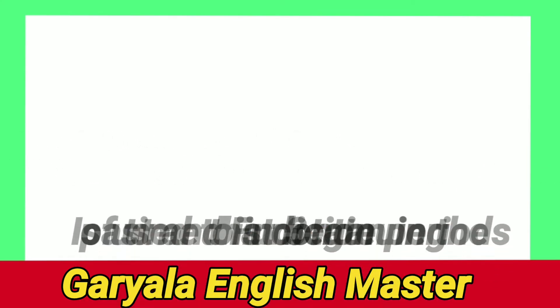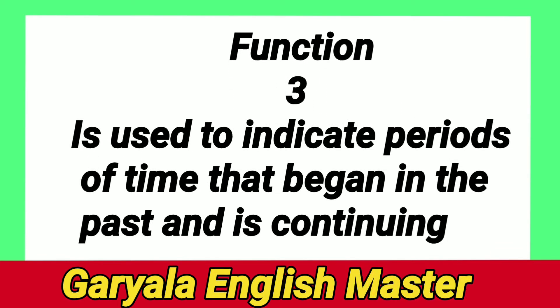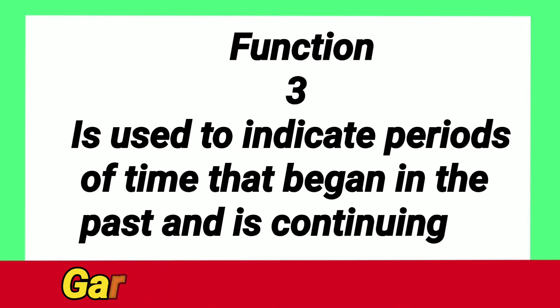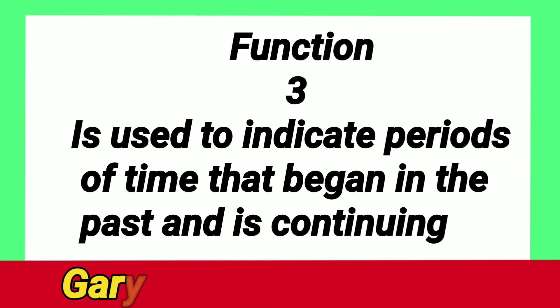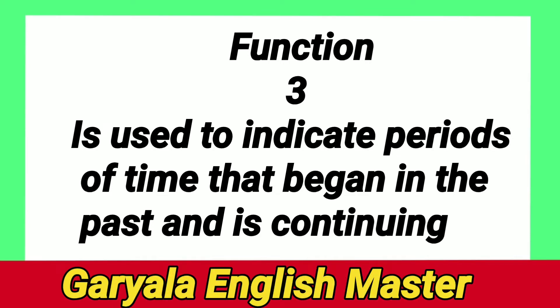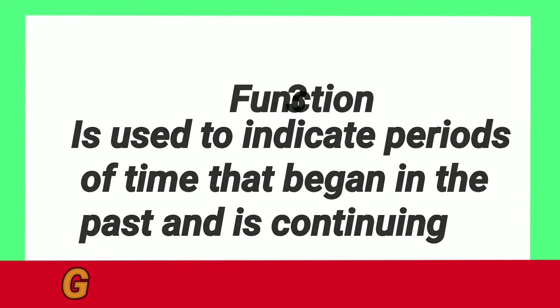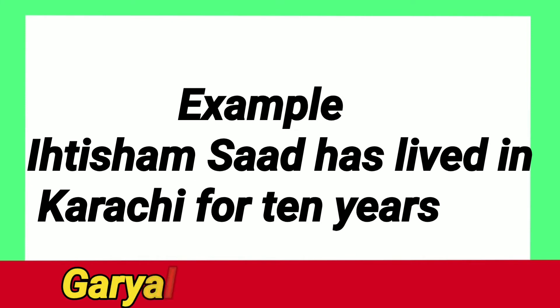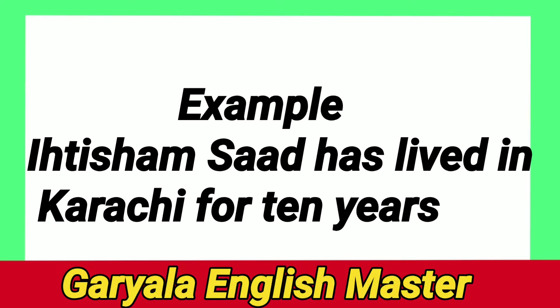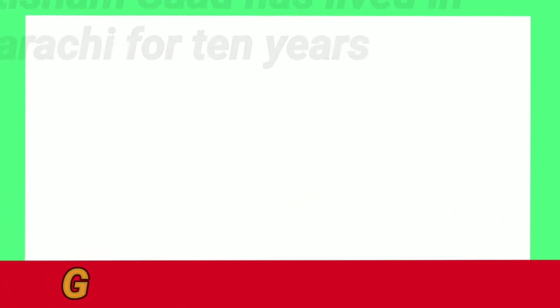Function number three: Present Perfect is used to indicate periods of time that began in the past and are continuing. Sometimes we use Present Perfect for an action where you can feel a period of time that began in the past and is still continuing. For example, if someone says 'He has been admitted to hospital,' we understand this person is still in hospital. 'Ihtisham Saad has lived in Karachi for ten years' means he is still living in Karachi.